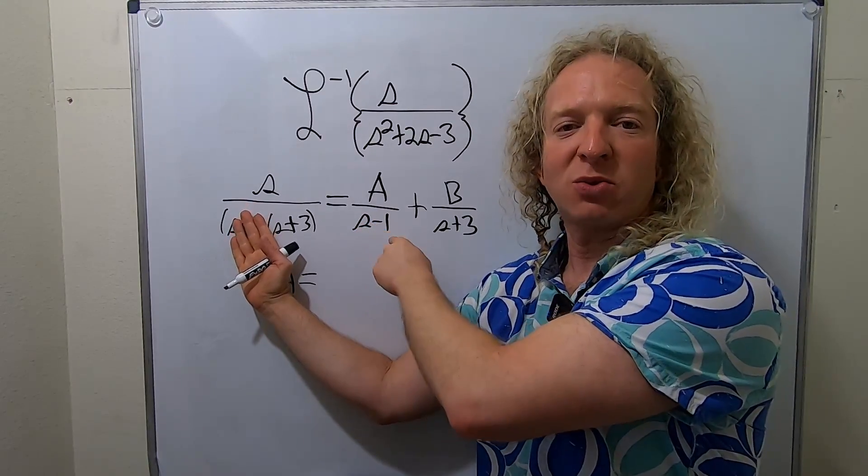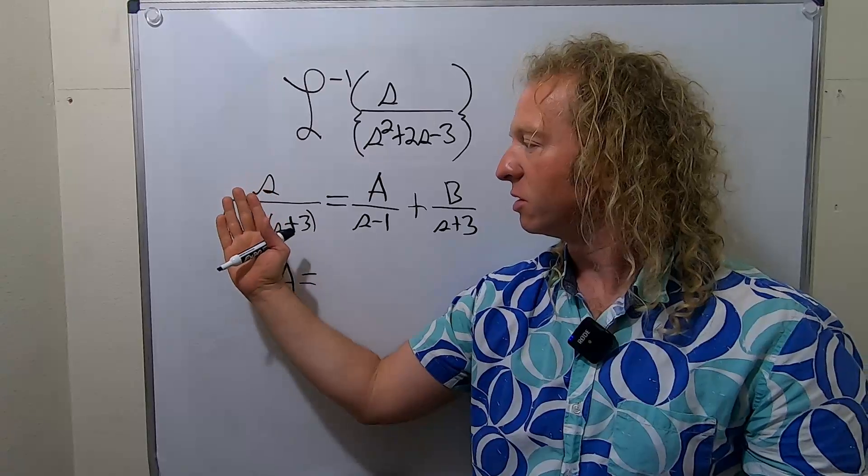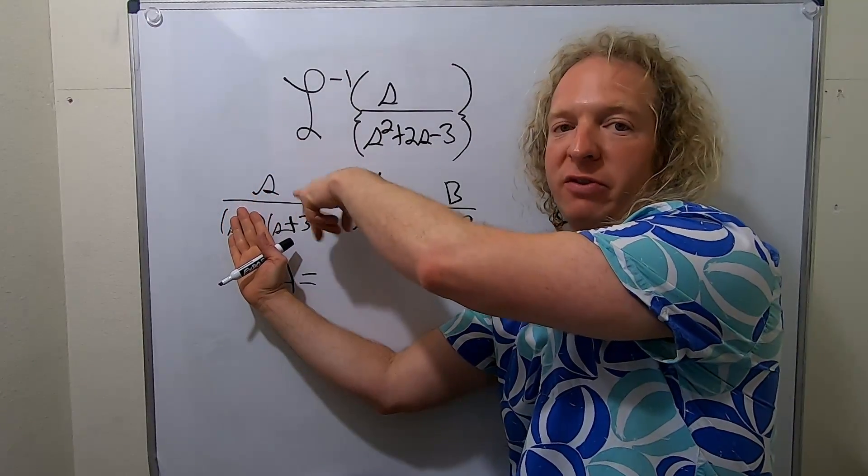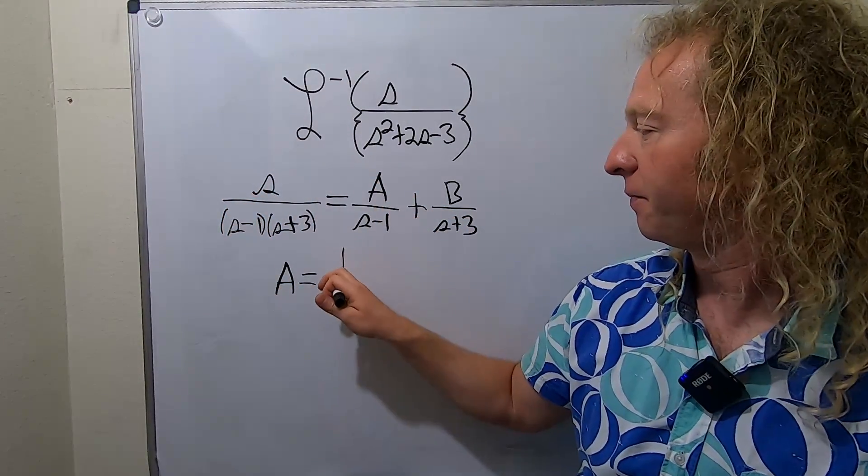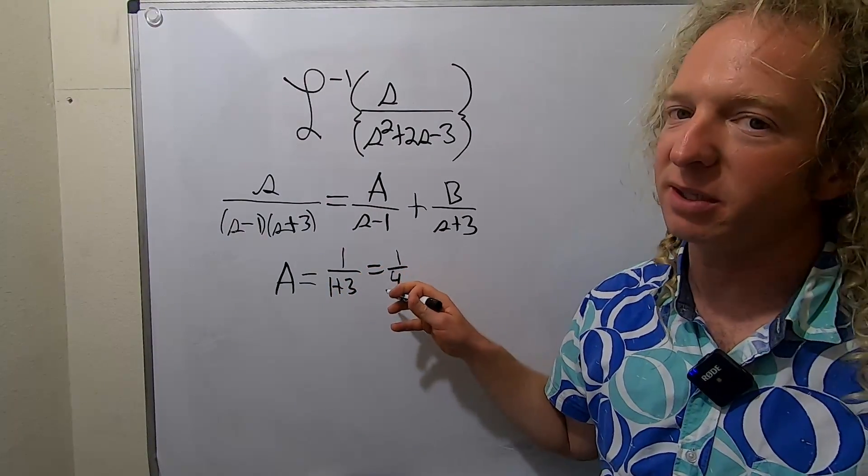Right, because you would get 1 minus 1 equals 0. So 1 is what causes the problem. So you cover it up over here, and then you plug in 1 through the other s's. So it would be 1 over 1 plus 3. So that's just 1 over 4. Piece of cake.